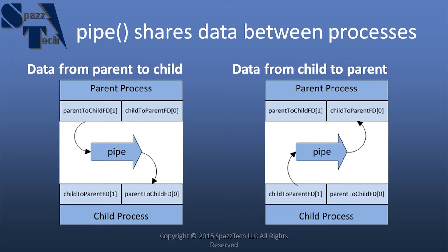Here in the diagram, we have a parent process with an array element I've called 'parent to child FD' — as in file descriptor. With the index of one, that means it's the write end. So we're going to write to index one, and that is the input into the pipe. Then in the child process down here, we read from index zero, and the operating system takes care of the rest. It is possible to write to the same pipe from both processes and to read from the same pipe from both processes.